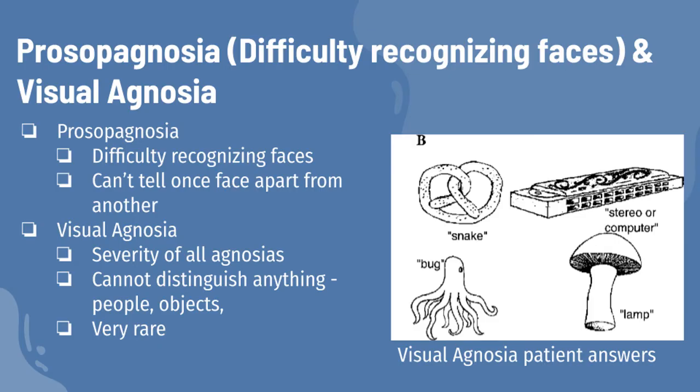There are other types of agnosia besides prosopagnosia. The most severe form is called visual agnosia. With visual agnosia, not only can a person not distinguish faces, they can't recognize or distinguish objects at all. A person with visual agnosia will have perfectly clear vision but not be able to tell what they're looking at — a flower might be mistaken for a dog, or a pen for a spoon. This type of agnosia is rare, however, and the majority of patients with temporal lobe damage do not experience such severe effects.